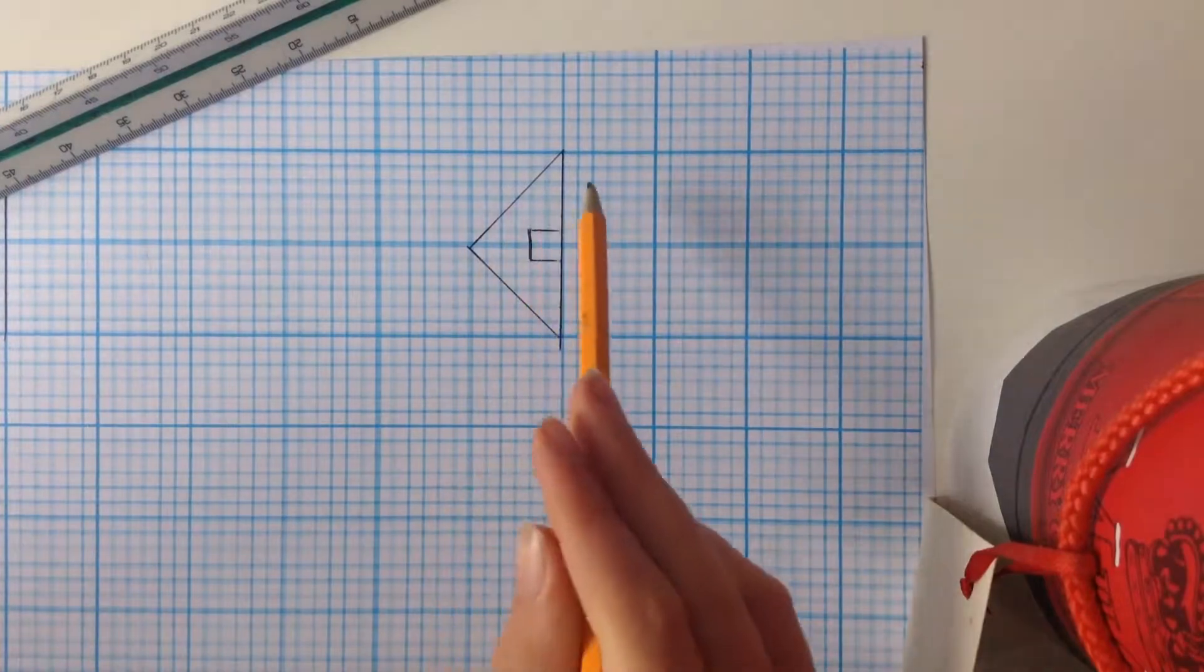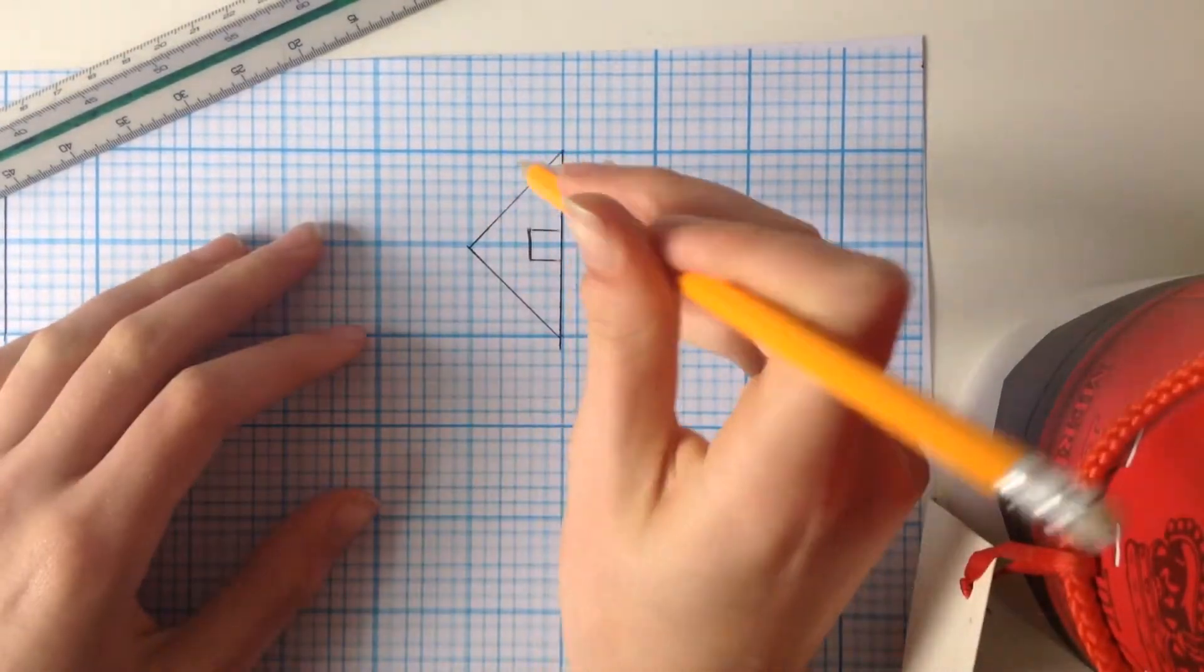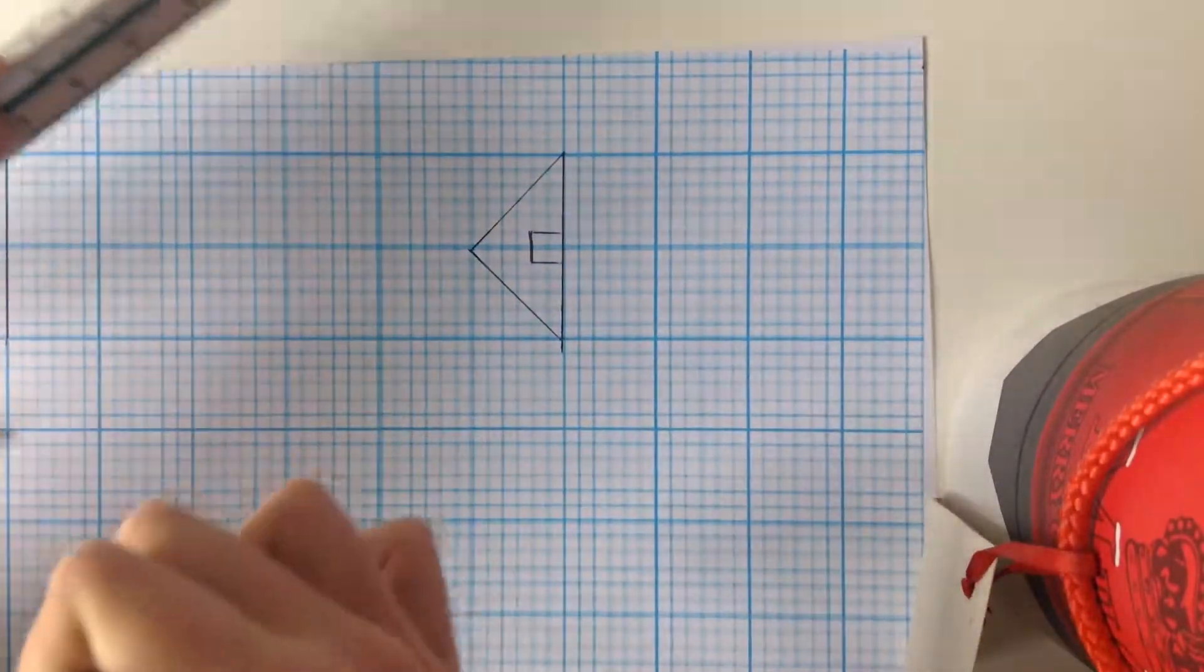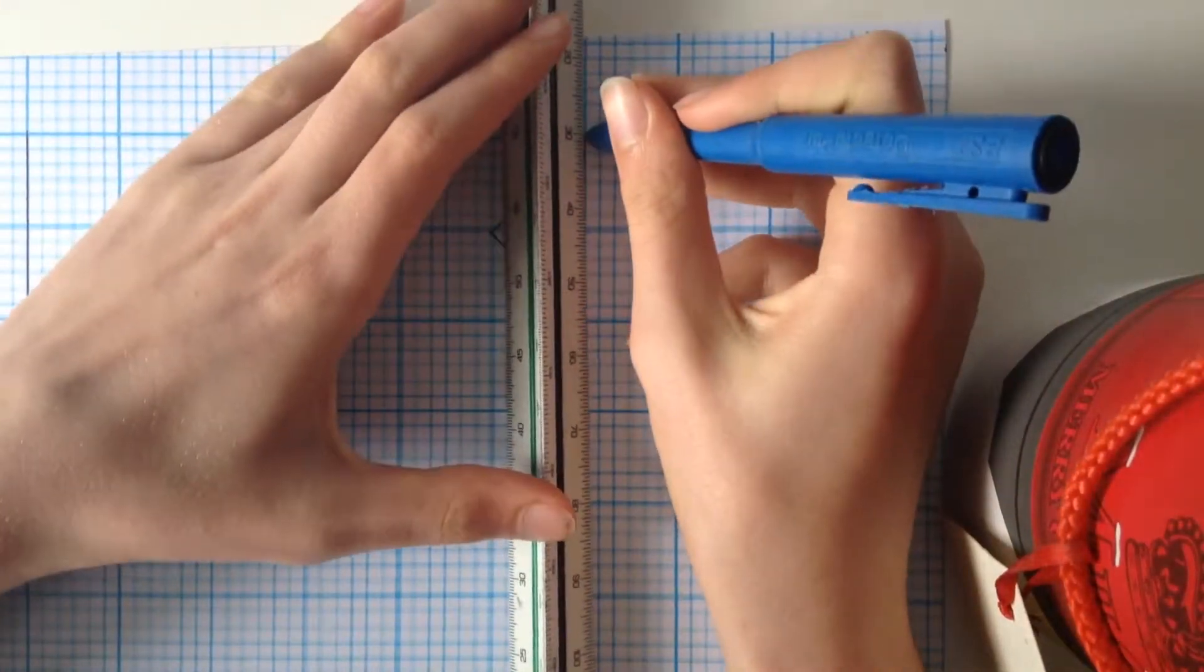So, as you can see here, we have a triangle and a square, and then a line going through it.